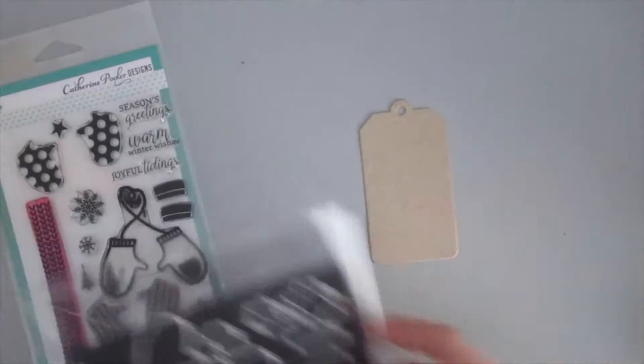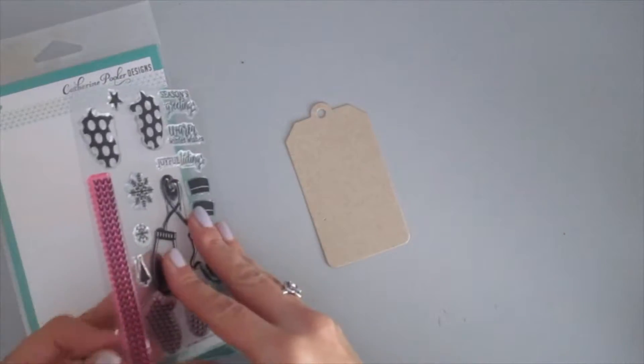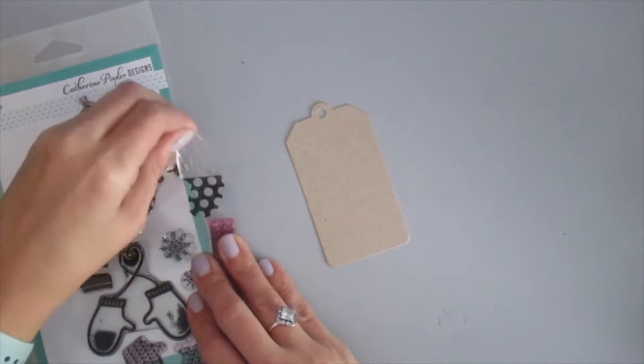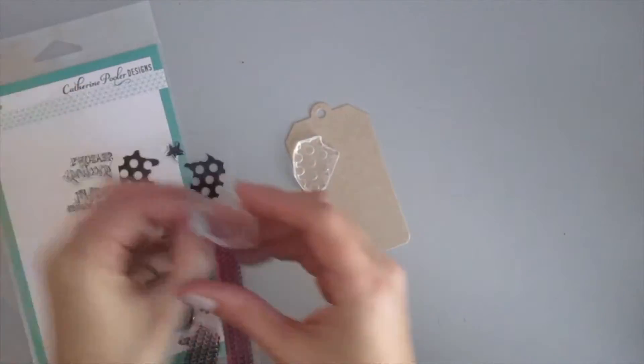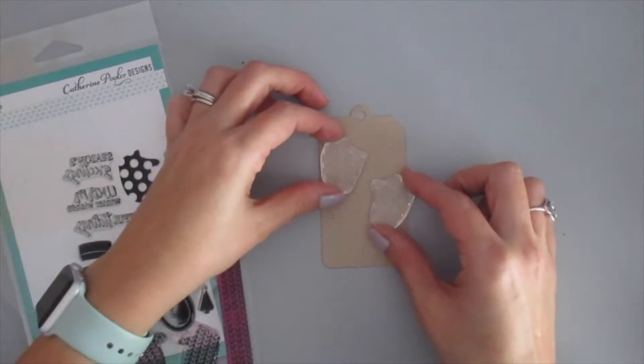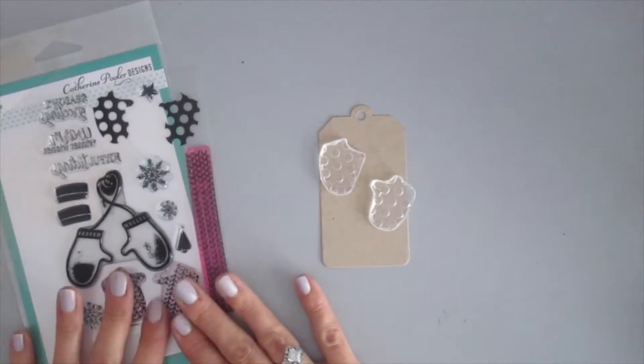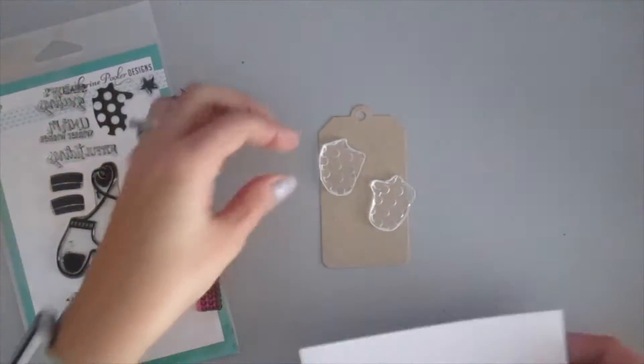So you can see I have a stamp set here with some coordinating dies. Now first I die cut some tags from another die cut that I had on hand and this is a super cute set. It's called Holiday Mittens and you can see there's a couple different mittens on there. There's three pair.